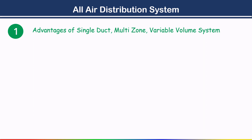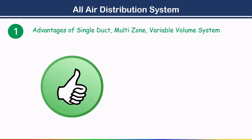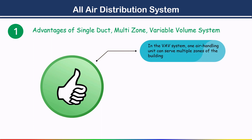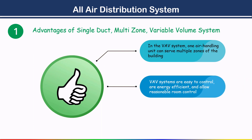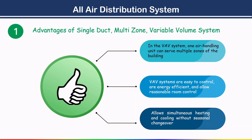Advantages of the single duct multi-zone variable volume system: First, one air handling unit can serve multiple zones of the building. Second, VAV systems are easy to control, energy efficient, and allow reasonable room control. Although the initial cost is higher than a CAV system, the running cost is low. Additionally, this system allows simultaneous heating and cooling without seasonal changeover.